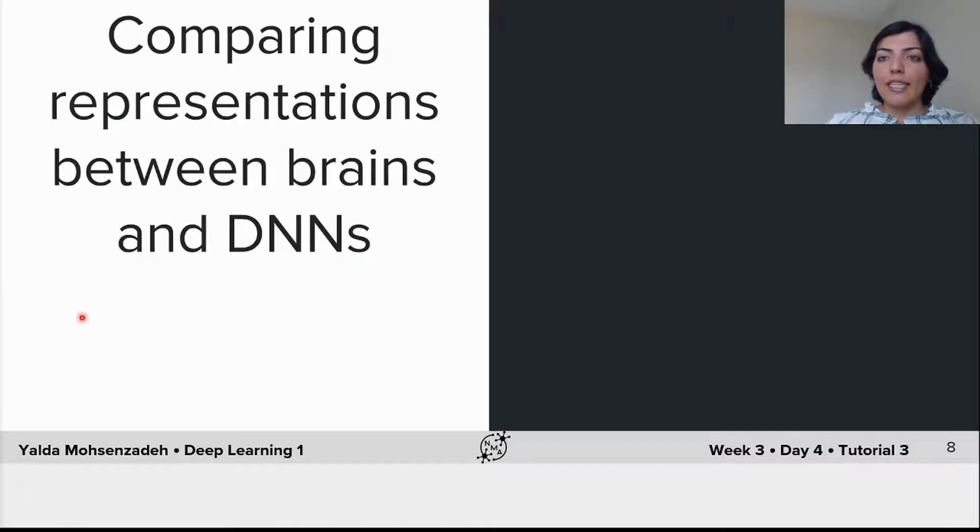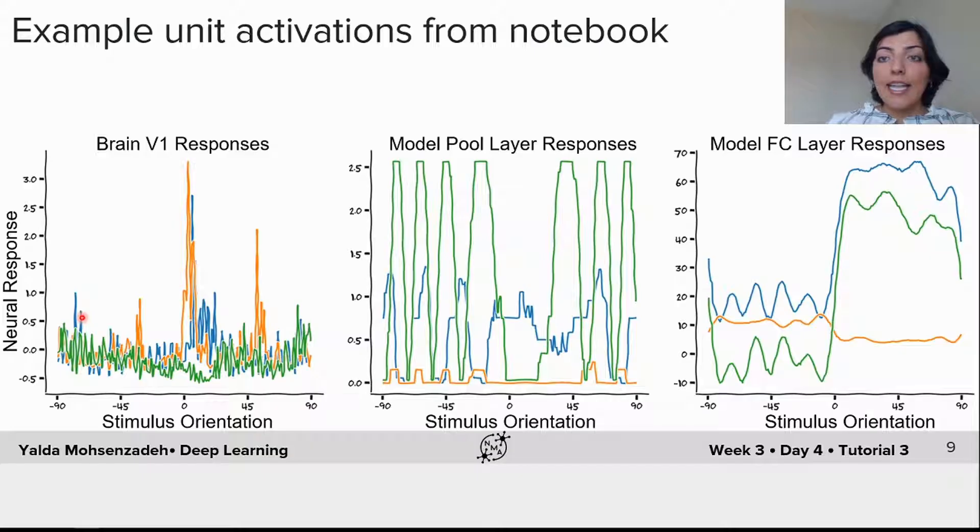Now that you trained your neural network to perform the orientation discrimination task, let's look at the activations of units in the neural network and compare it with the brain neurons activations.